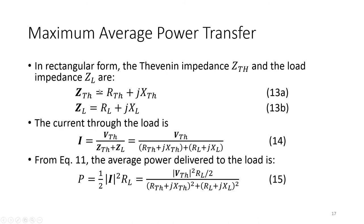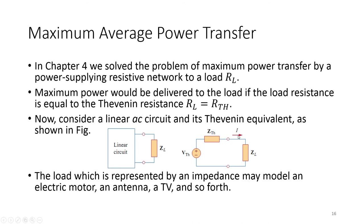In rectangular form, the Thevenin equivalent impedance is written as RTH + j·XTH, and the load impedance ZL equals RL + j·XL — the real resistive portion and the reactive portion of the load impedance. To find the current through the load, we divide the voltage by ZTH plus ZL.